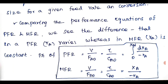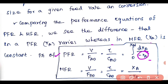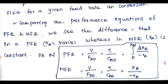Comparing the performance equations of PFR and MFR: For PFR, V/FA0 = τ/CA0 = ∫₀^XAF dXA/(−rA), where −rA is variable with concentration. For MFR, V/FA0 = τ/CA0 = XA/(−rA), where −rA is constant — so no integral sign is needed. Compared to PFR, the MFR performance equation is simpler and allows direct calculation of reactor volume without integration.